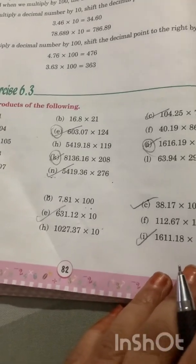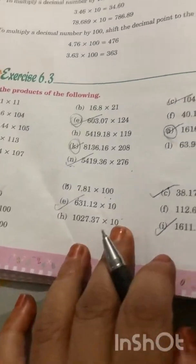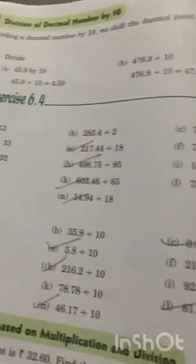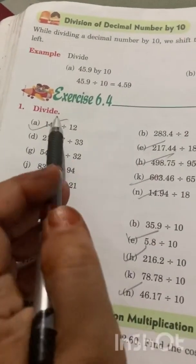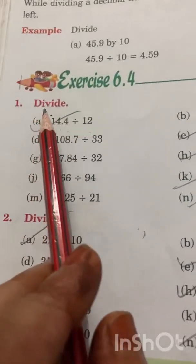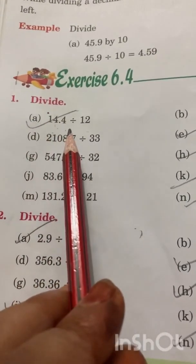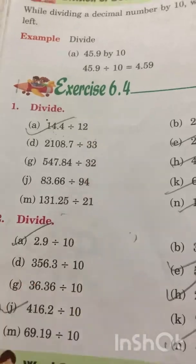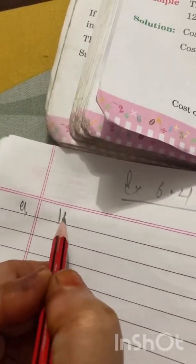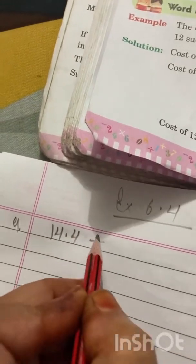Now we will start chapter 6.4, which is on division. Question number one: 14.4 divided by twelve. What is our first question? It is 14.4 and we have to divide this number by twelve.